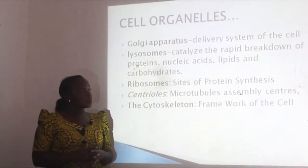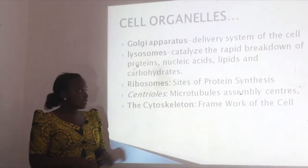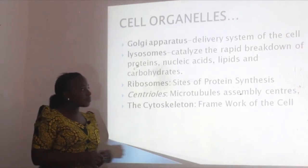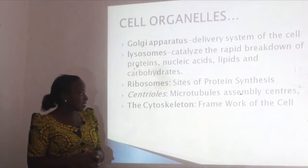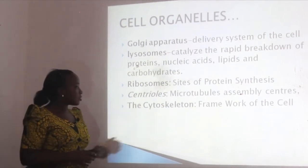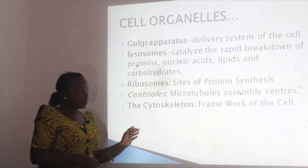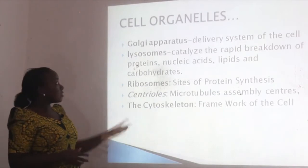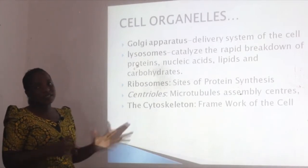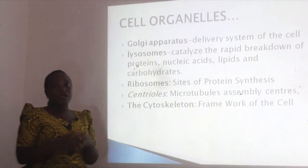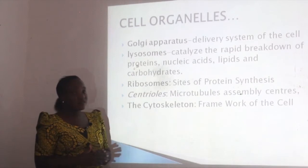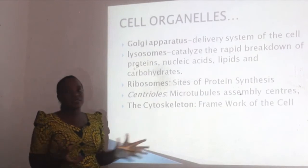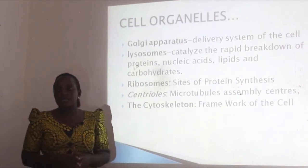Ribosomes are sites of protein synthesis — protein is synthesized in the ribosomes. Centrioles are microtubules involved in cell division. The cytoskeleton provides the fullness and shape of the cell. Some organelles are found in both prokaryotic and eukaryotic cells; others are found only in eukaryotic cells, while others are found only in prokaryotic cells.